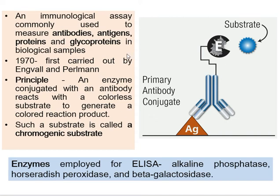The basic principle is the specificity of antigen-antibody interaction. If you want to detect the presence of an antigen, you need an antibody in your kit that can specifically bind to the antigen. If you want to find the presence of an antibody in a sample, you just need an antigen to which that antibody specifically binds. So if you want to detect antigen, your kit should contain the specific antibody, and if you want to detect the antibody, your kit should contain the specific antigen.